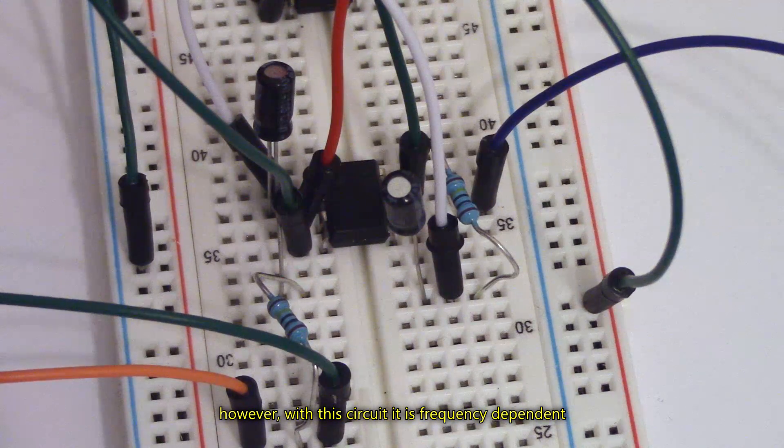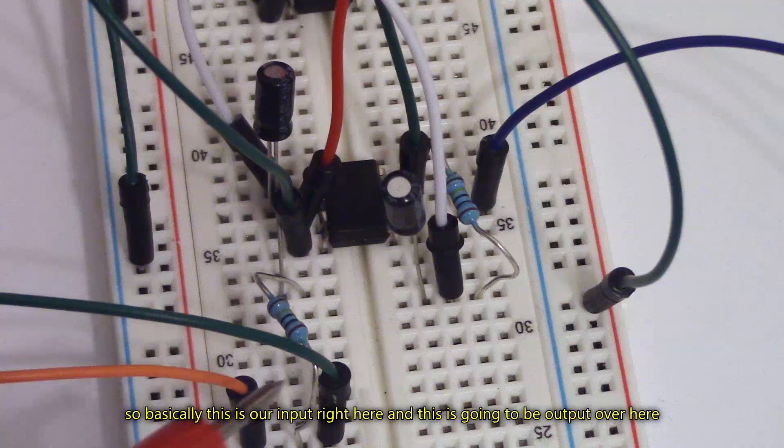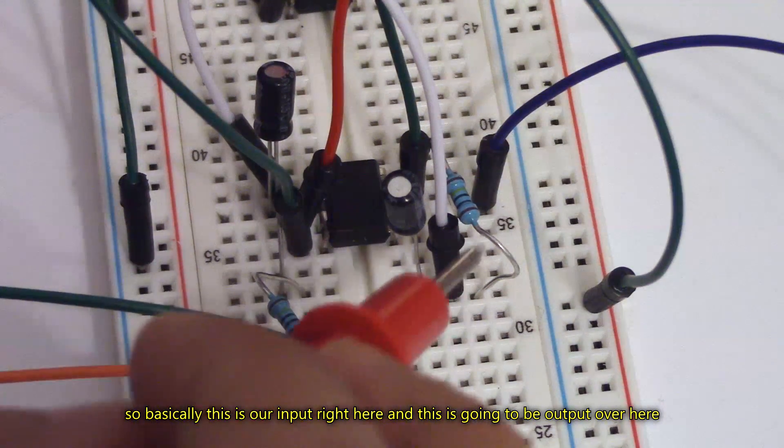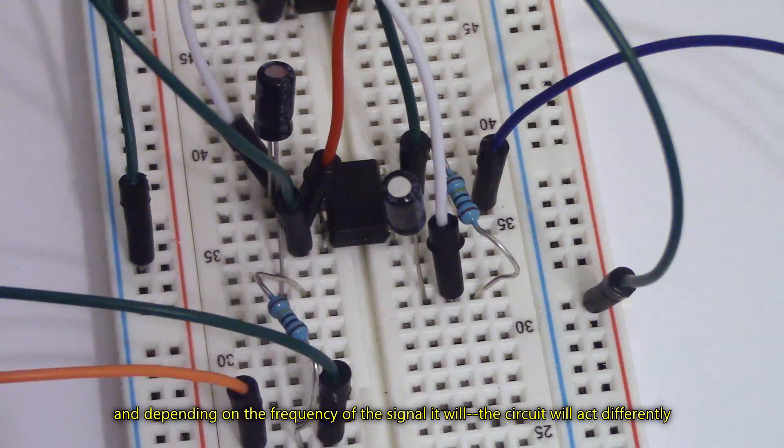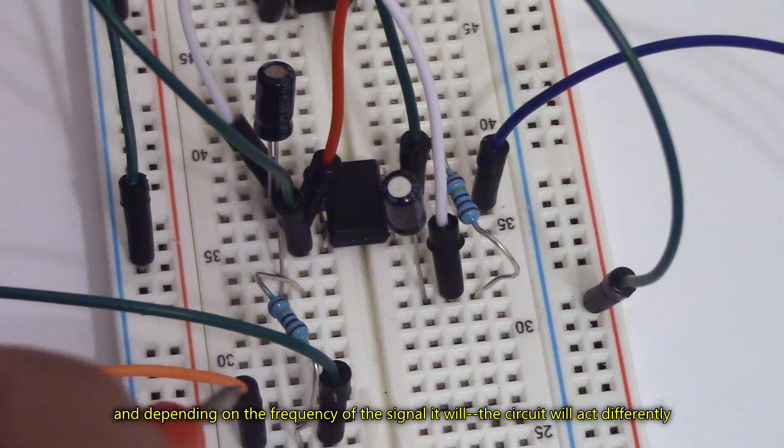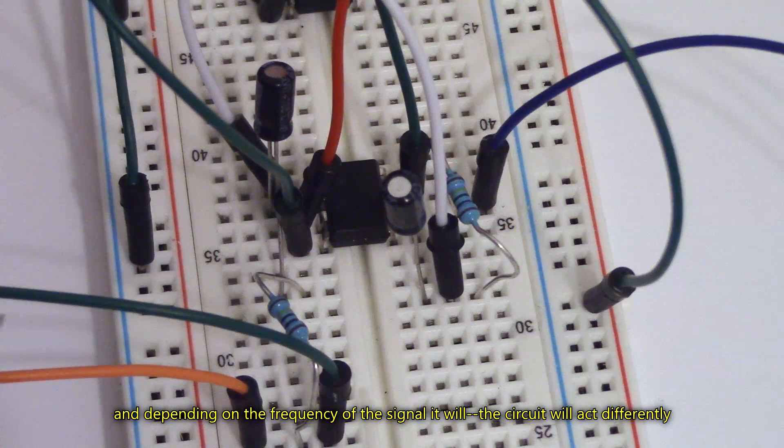However, with this circuit, it is frequency dependent. So basically, this is our input right here and this is going to be our output over here. And depending on the frequency of the signal, the circuit will act differently.